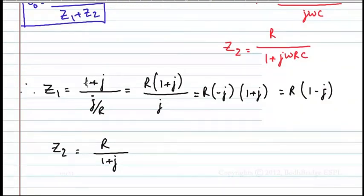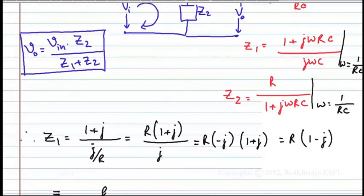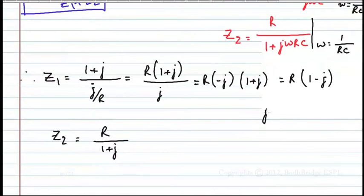Therefore Z1 is what? When omega is equal to 1 by Rt. Here omega is equal to 1 by Rt from the given input. We can see what is omega. Therefore put omega equal to 1 by Rt and simplify. You will get 1 plus j by j by Rt. When you simplify this you will get this final expression. Here you will use j squared equal to minus 1.